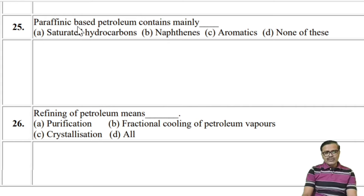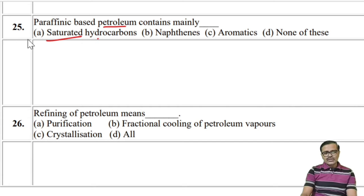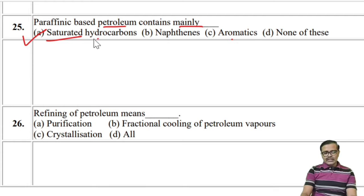Paraffinic-based petroleum contains mainly alkanes — saturated hydrocarbons — as the major component. So the answer is A: saturated hydrocarbons.